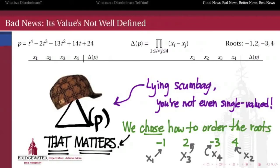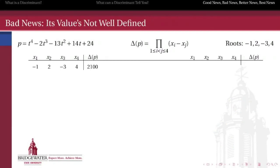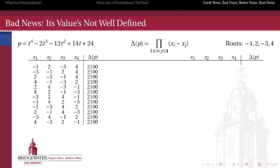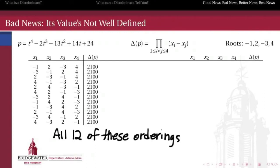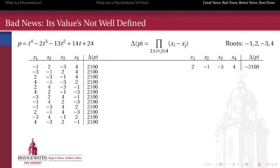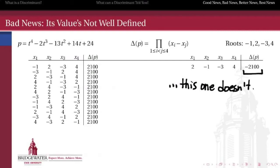So here's a quartic on this slide with four roots — negative 1, 2, negative 3, and 4. And before I compute the discriminant, I have to decide how to order those roots. And that choice matters. If we choose to order the roots differently, we might compute a different discriminant. Let's verify that for this quartic. If I order those four roots as negative 1, 2, negative 3, and 4, I compute a value of 2100 for the discriminant. There are 12 different orderings that all give the same answer of 2100. But then there's an ordering — 2, negative 1, negative 3, 4 — that comes out with a discriminant of negative 2100. And 11 others like it that also disagree.